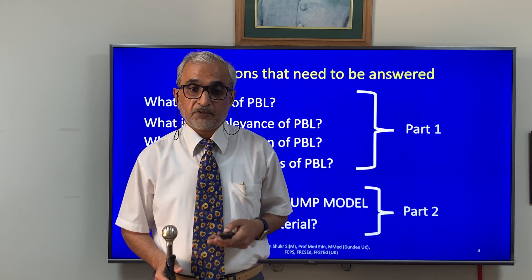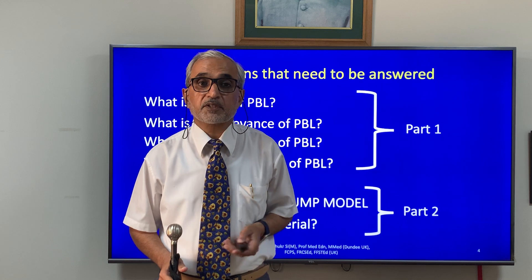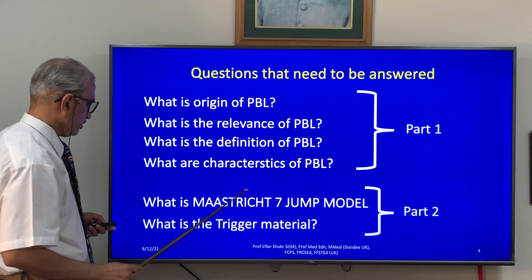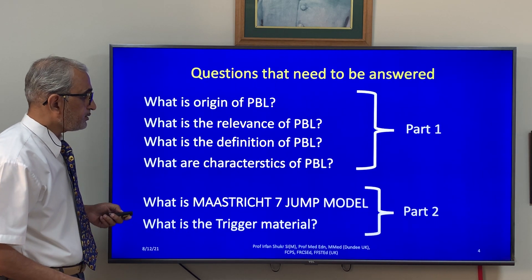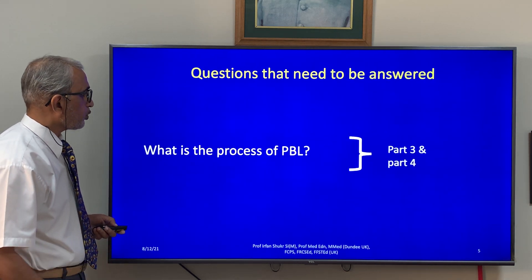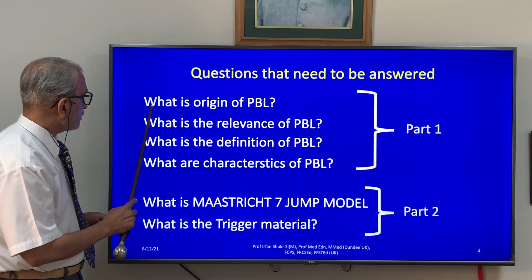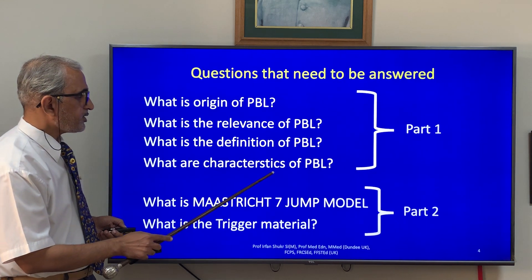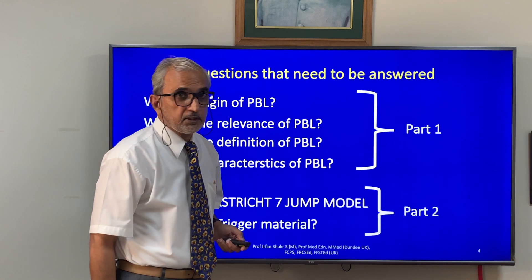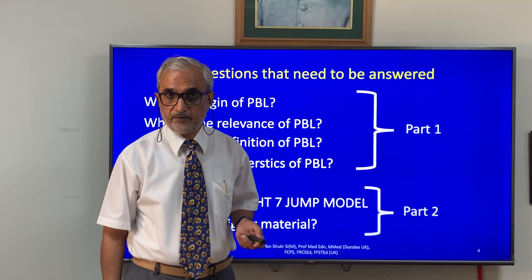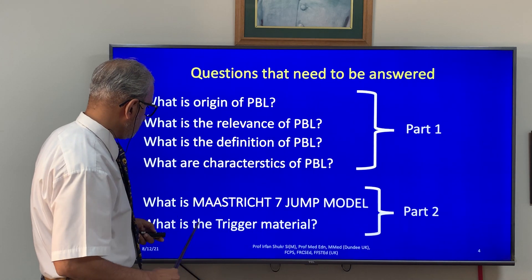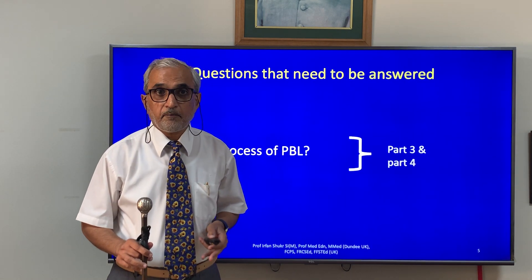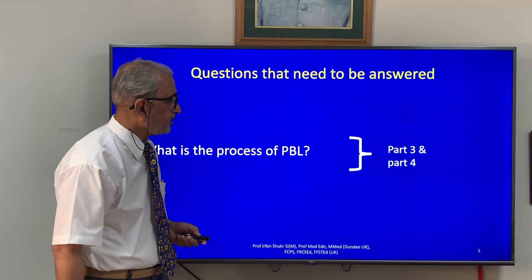There are also a lot of terminologies in which the word 'problem' is used, like problem-solving, which I will discuss later on. Then: what is the Maastricht 7-jump model, what is the trigger material, and what is the process of PBL? So the topics of origin, relevance, definition, and characteristics constitute part one. The Maastricht 7-jump model and trigger material will be part two, and the process of PBL — how it is conducted — will be parts three and four.